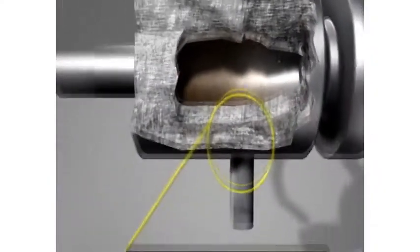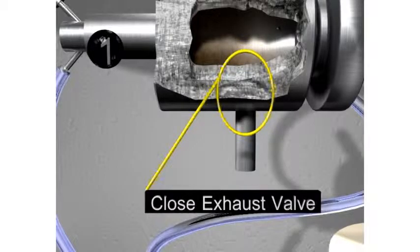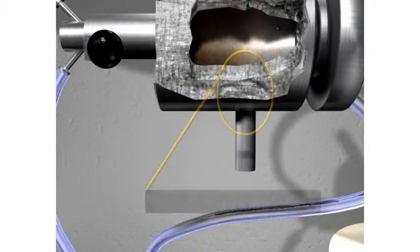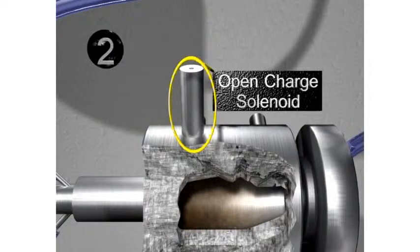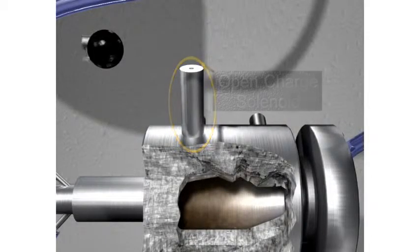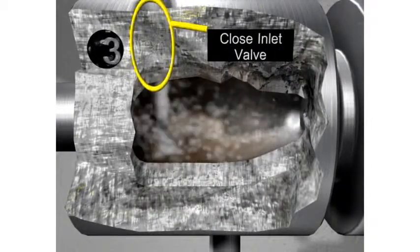To perform a single test injection, the exhaust valve is closed and the inlet valve is opened. The charge solenoid is then opened to fill the chamber with compressed air. The inlet valve closes to seal the chamber.